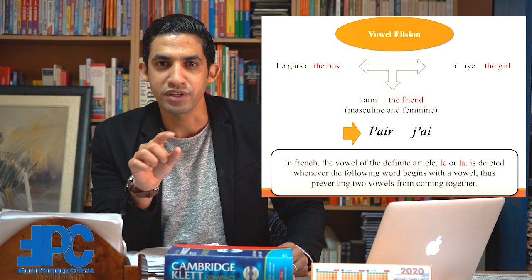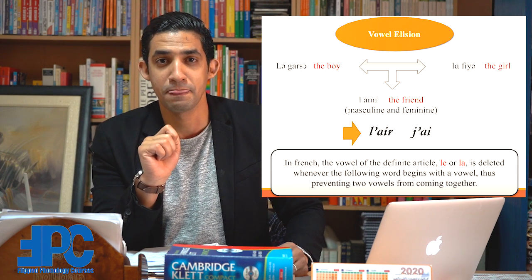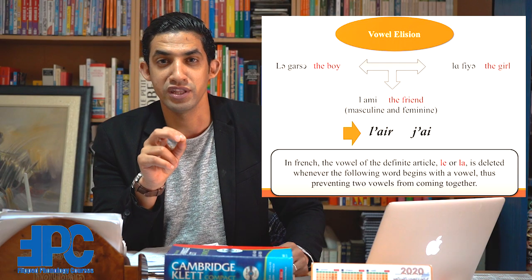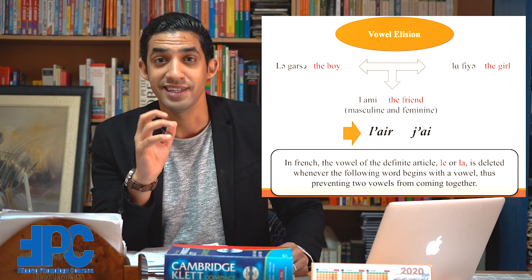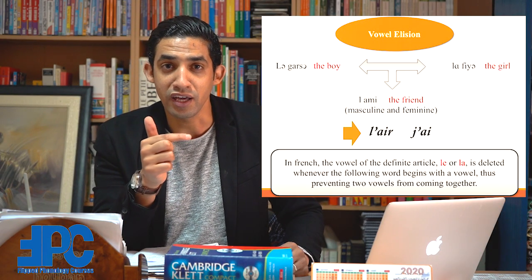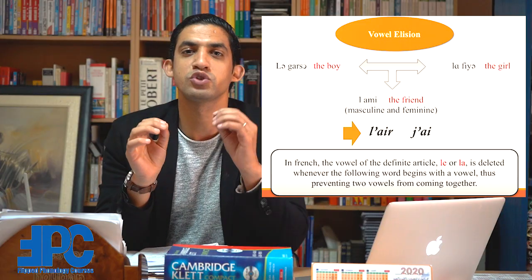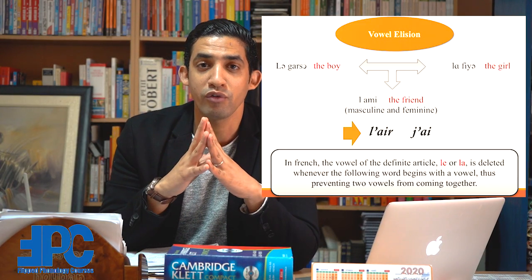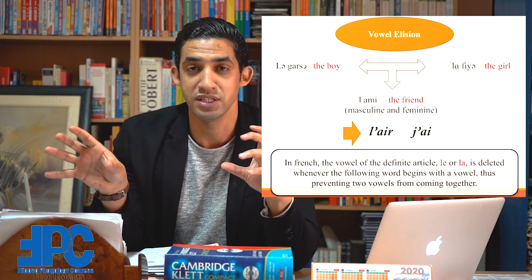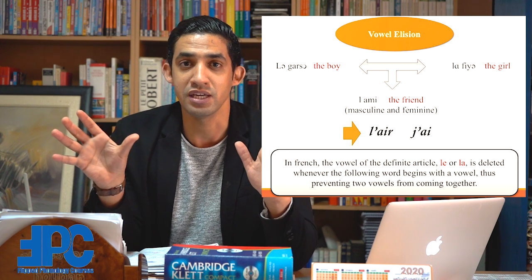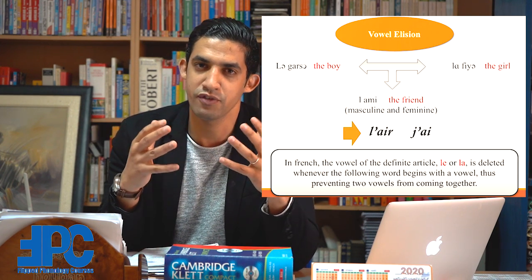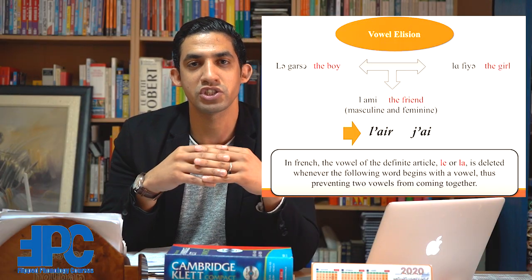Now let's look at vowel elision — when we actually delete a vowel. In French, this is common: the vowel /e/ or /a/ in the definite articles 'le' and 'la' is deleted when those articles are added to a noun starting with a vowel, in order to avoid hiatus. For example, 'le' or 'la' plus 'ami' (meaning 'friend') does not become 'le ami' or 'la ami' but rather 'l'ami.' This is also seen in other French examples like 'j'ai' and 'l'a.'